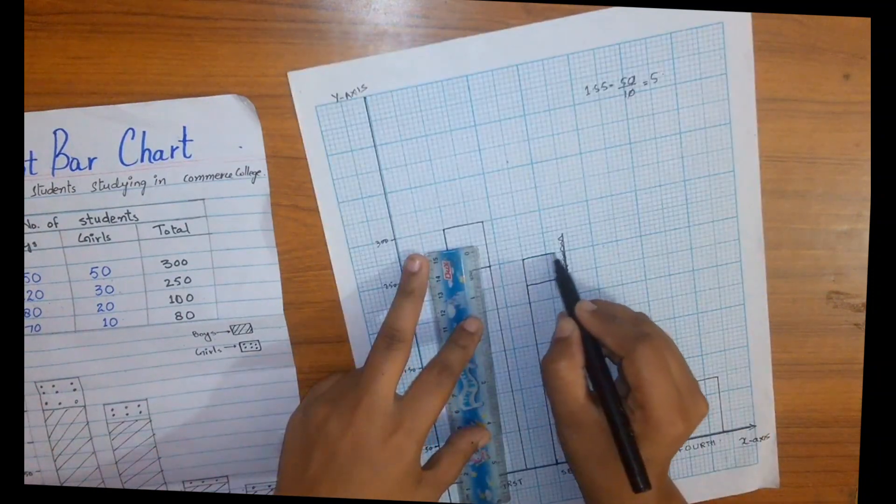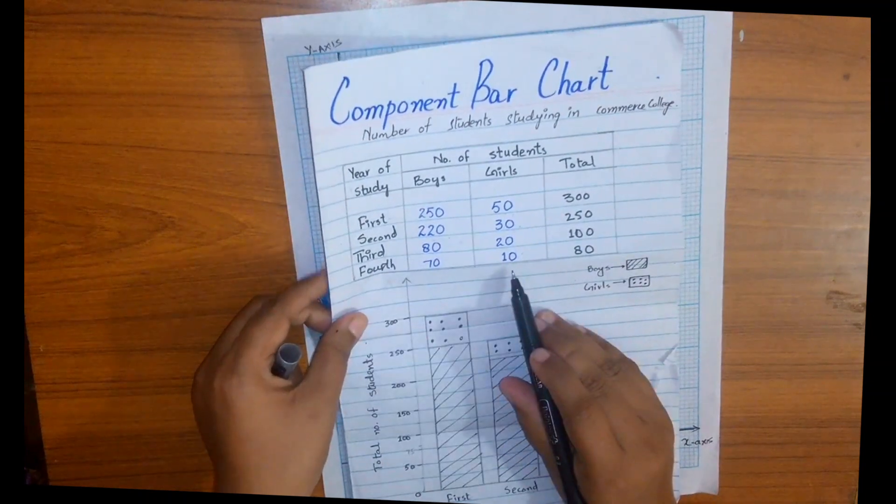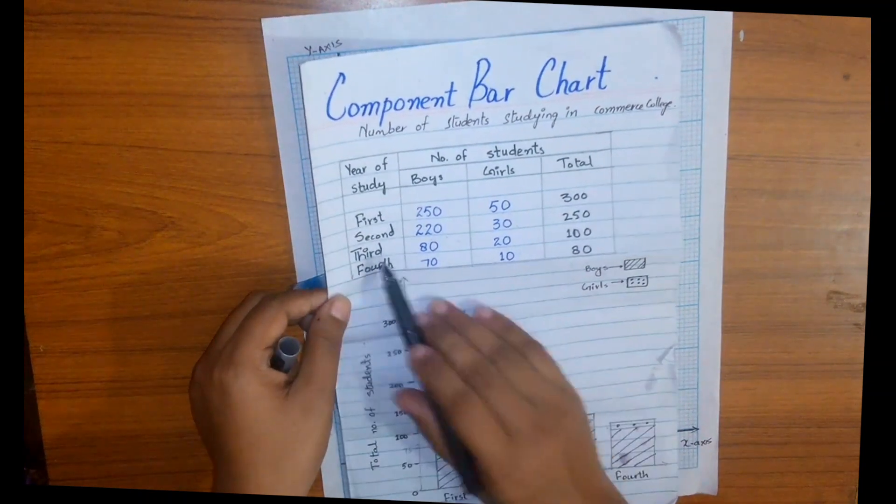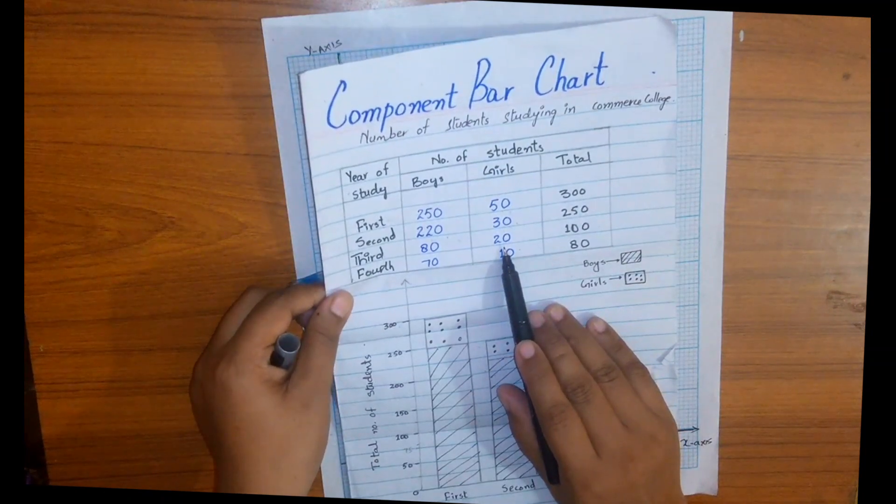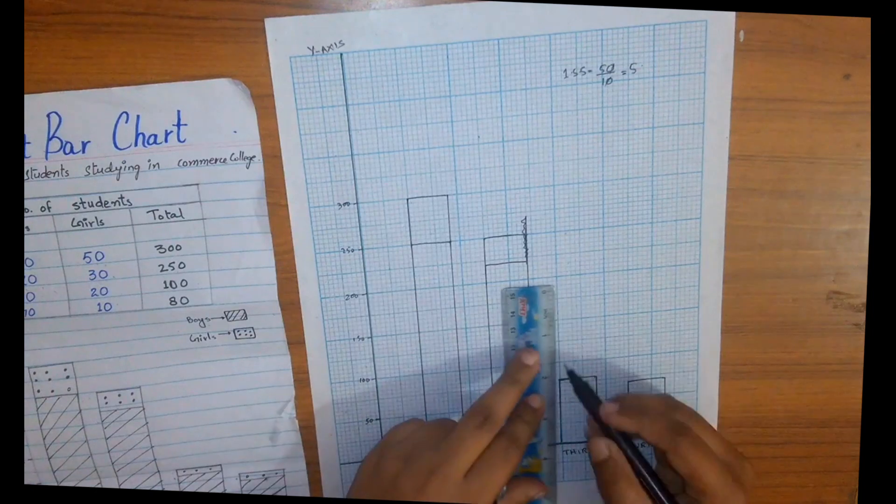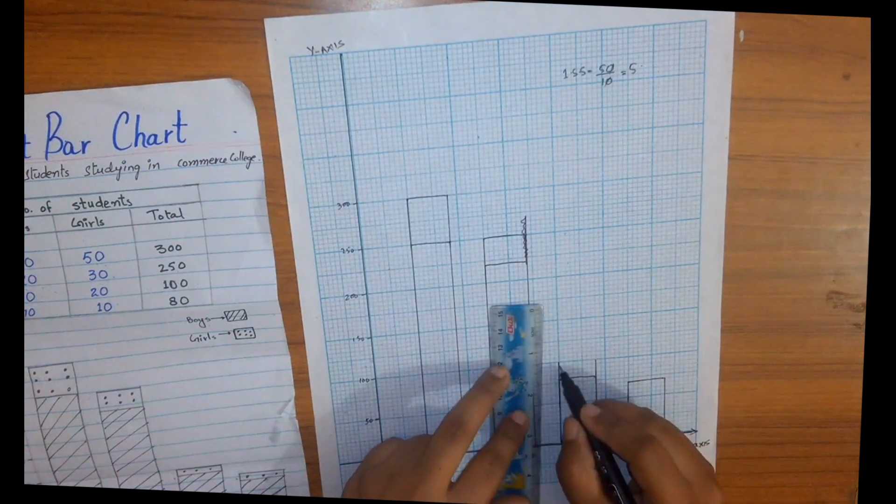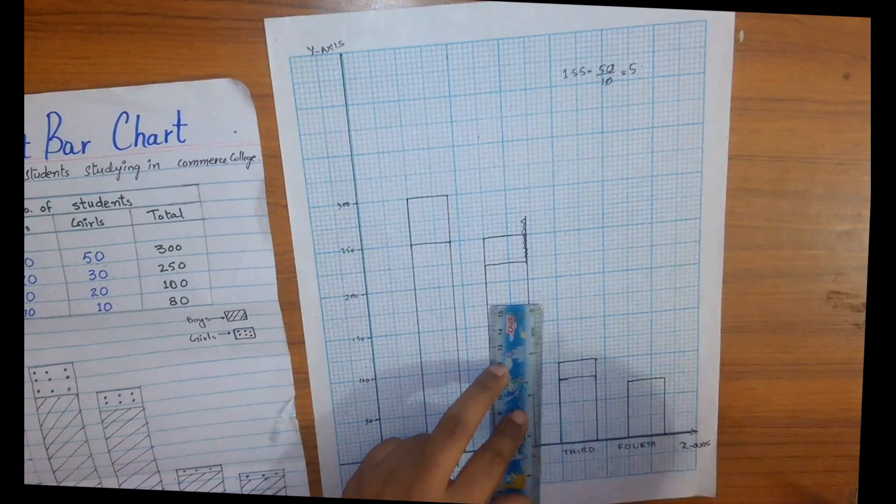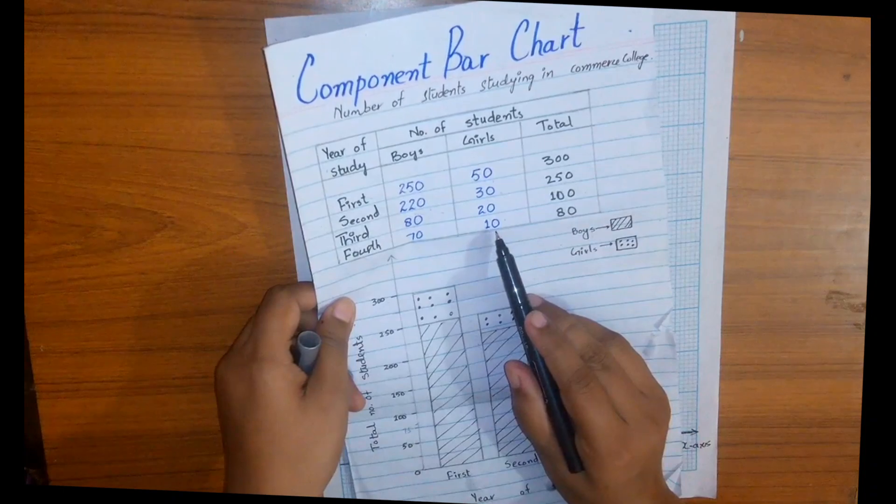In third year we have only 20 girls, and in fourth year we have only 10 students, which are 20 making a sum of 100. In fourth year only 10 girls which makes a sum of 80.